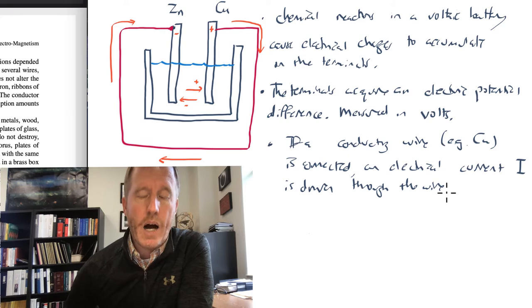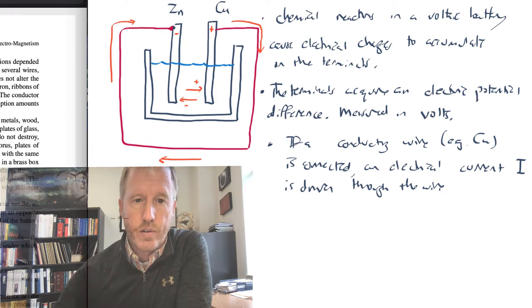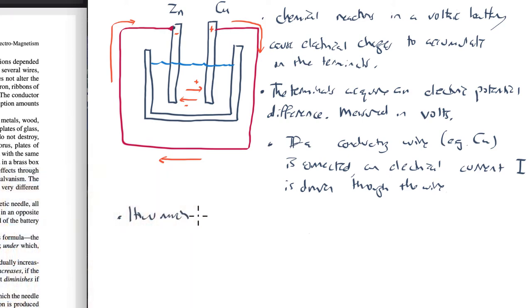Now, how much electrical current is driven through the wire? What's the magnitude of the size of this electrical current? Well, it depends on a couple of things. It depends, first of all, on the voltage of the battery. And secondly, it depends on the properties, specifically the resistive properties, of the wire.